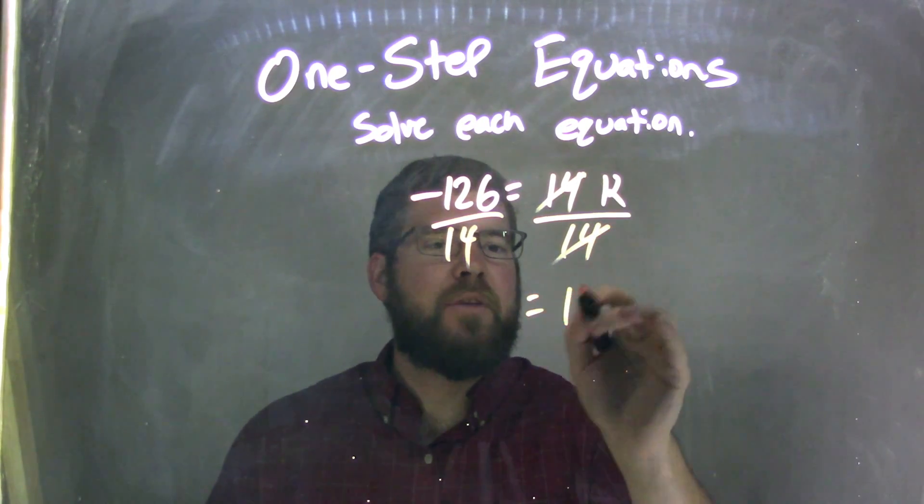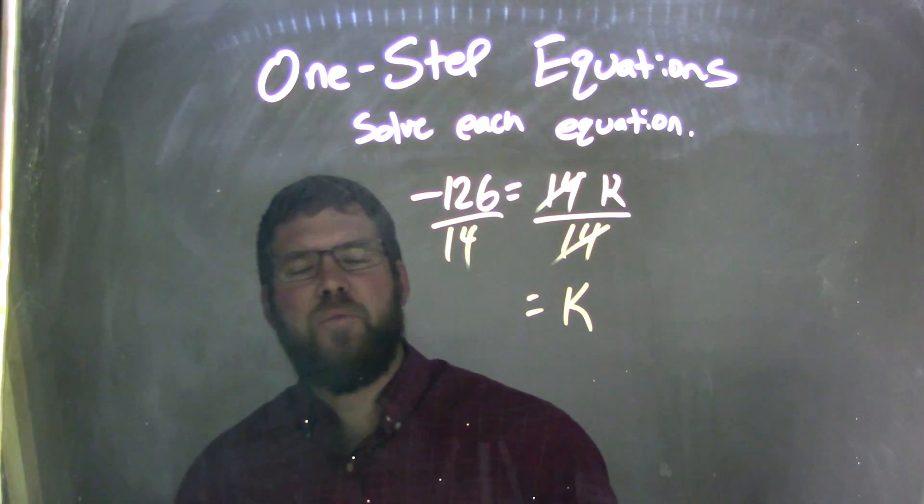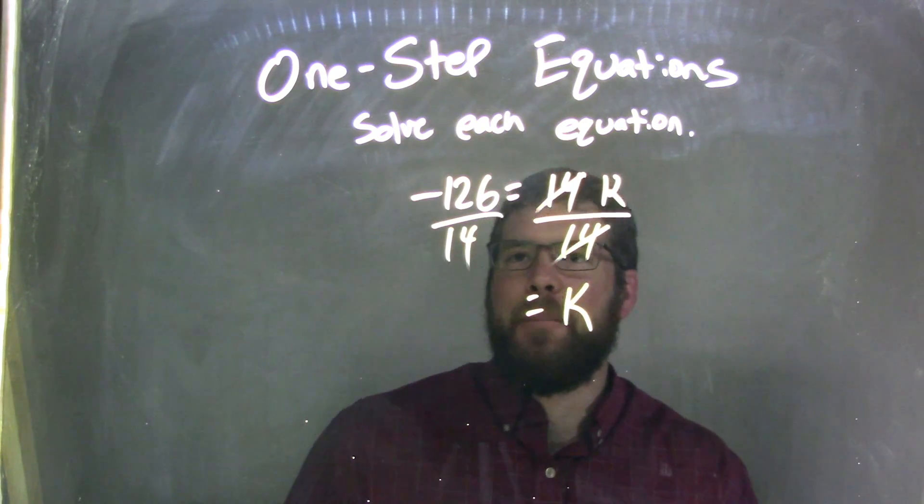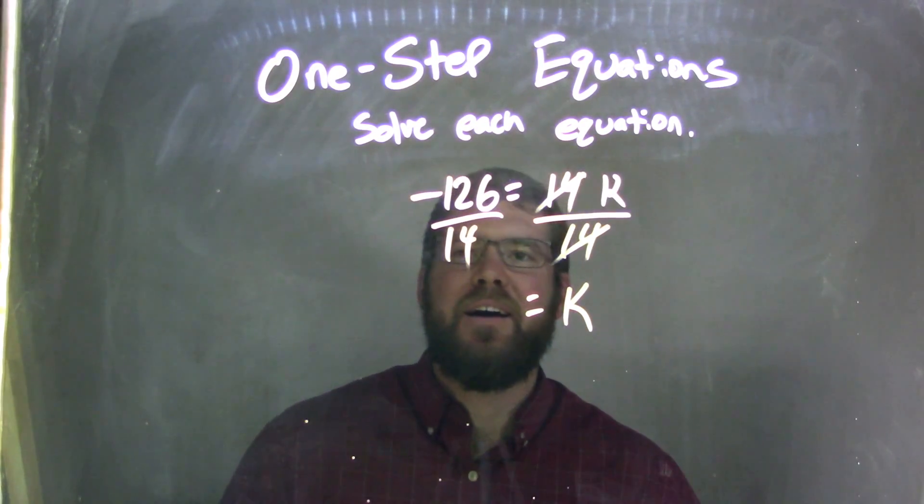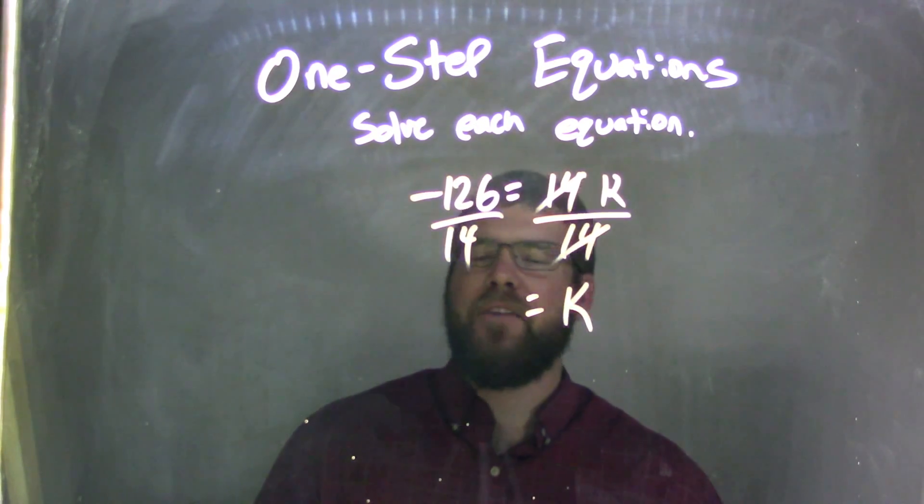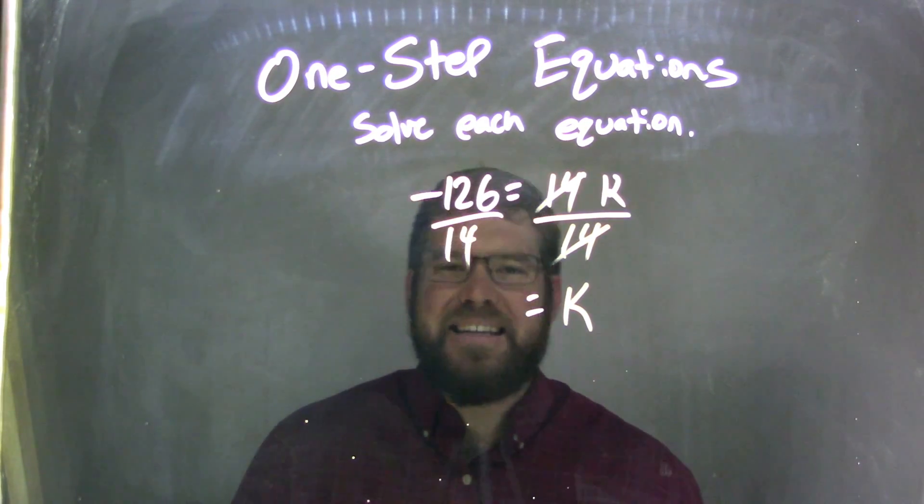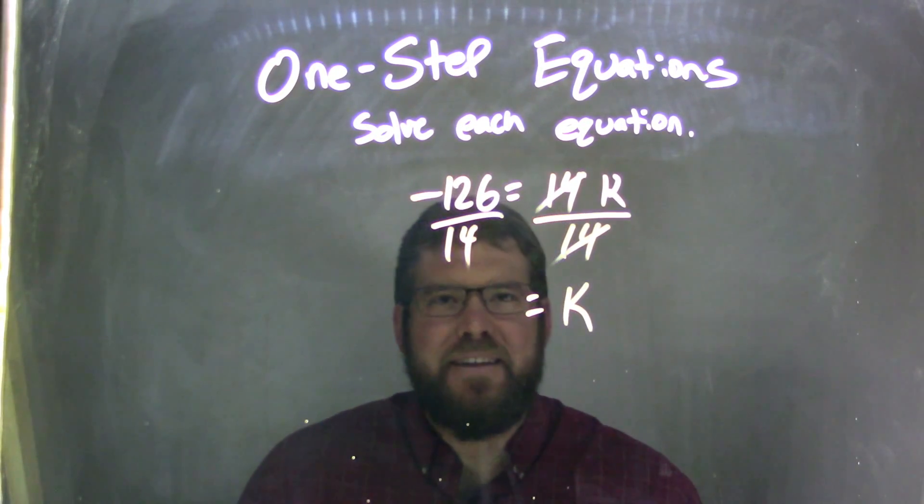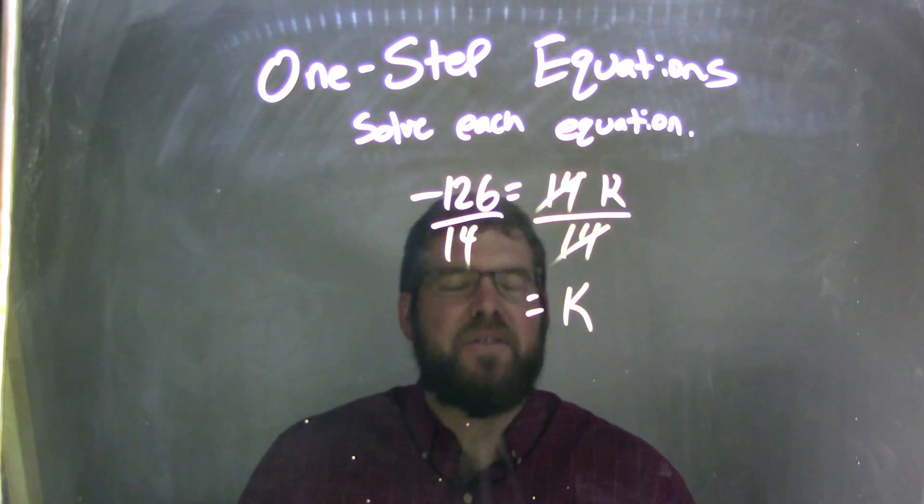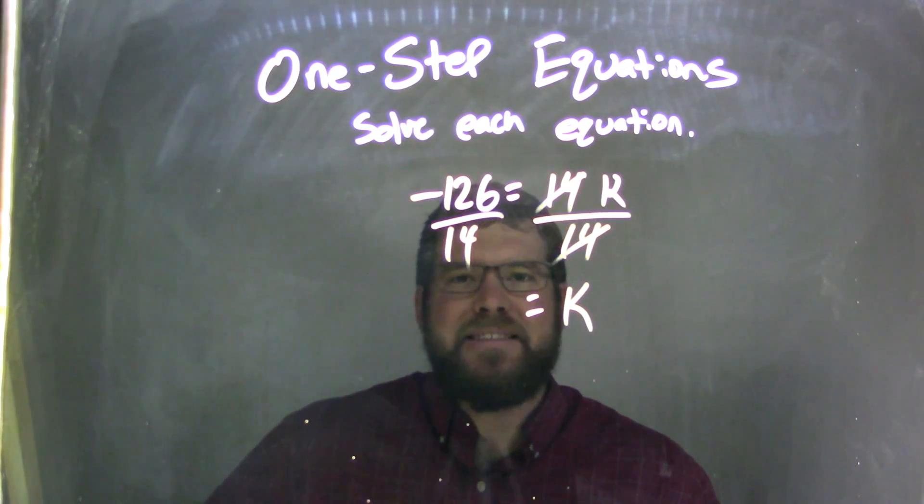14s cancel, I'm left with k here on the right, but I have negative 126 over 14, and I know that a negative divided by a positive is still negative, but I can't see necessarily, and long division really doesn't help in a sense here, I think, personally. And so, how can I break this down?